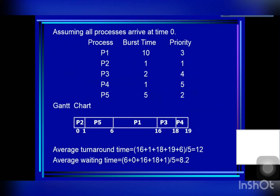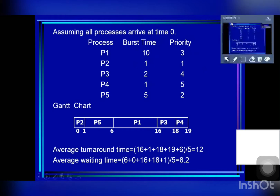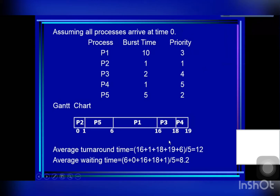Let's look at an example. Assuming all processes arrive at time zero, we have five processes altogether. This column gives the CPU burst time in milliseconds, and this column is the priority. Because all processes arrive at time zero, the Gantt chart is as follows.